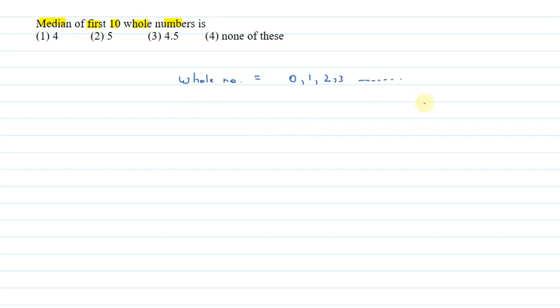So, what do we need to do? Now, we need to find the median of first 10 whole numbers. So, first 10 whole numbers are 0, 1, 2, 3, 4, 5, 6, 7, 8, 9.